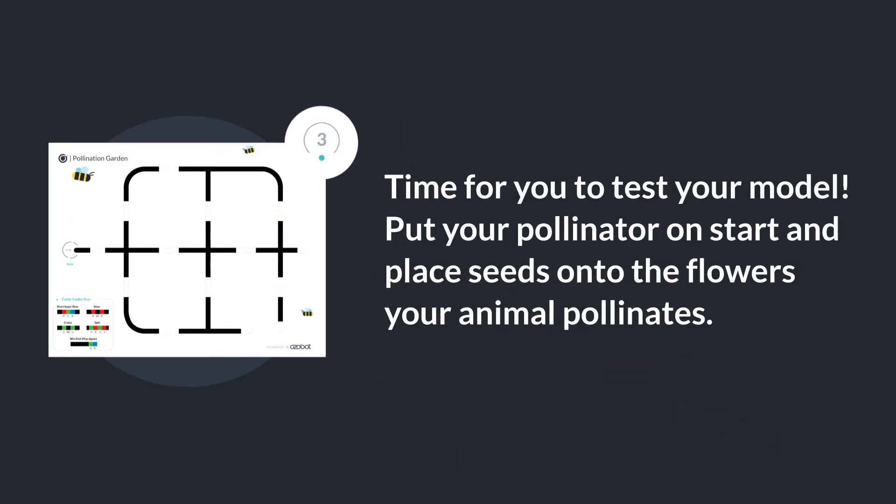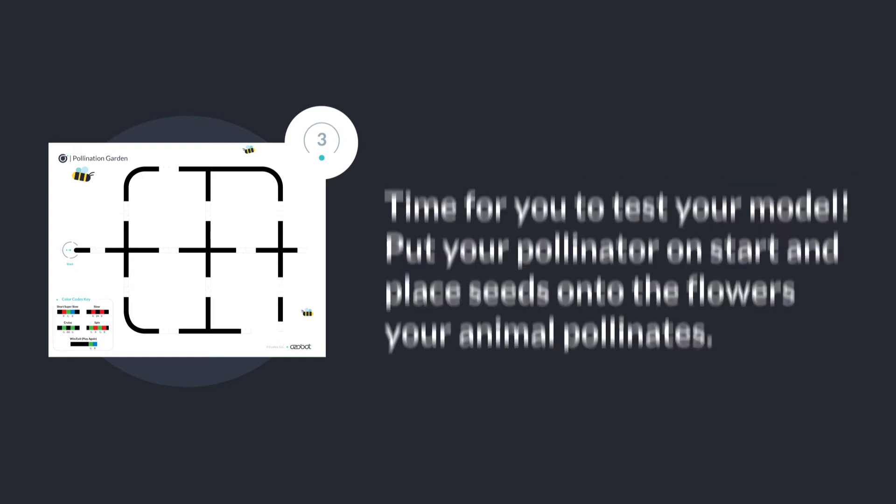Time to test your model. Put your pollinator on start and place seeds on the flowers your animal pollinates. Remember, the first flower does not get pollinated because this is where the animal collects the pollen.